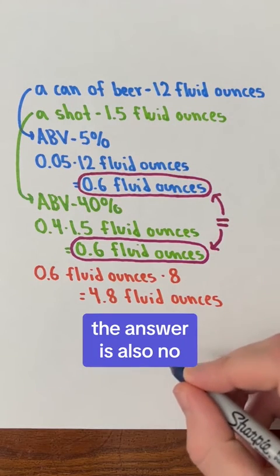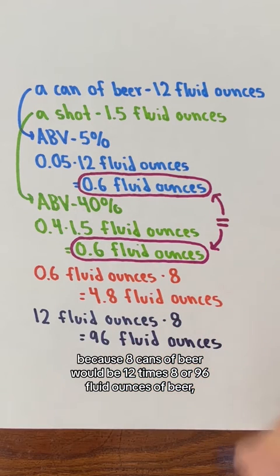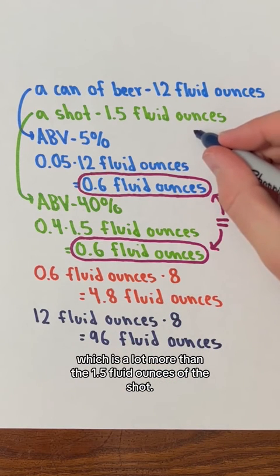In terms of volume, the answer is also no, because 8 cans of beer would be 12 times 8 or 96 fluid ounces of beer, which is a lot more than the 1.5 fluid ounces of the shot.